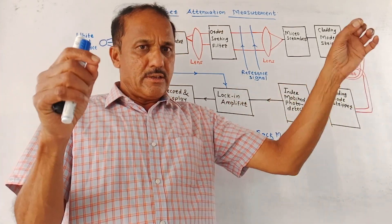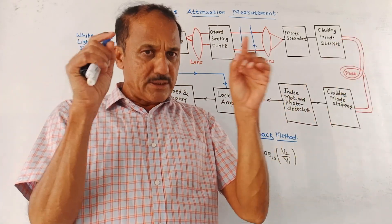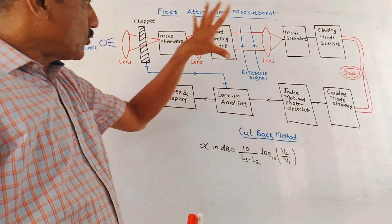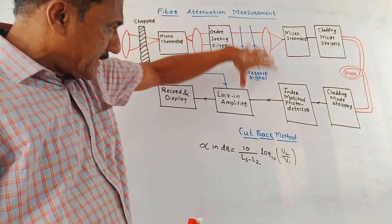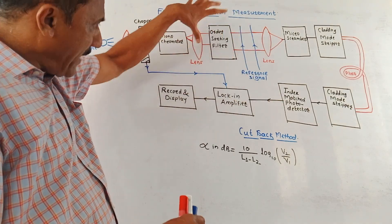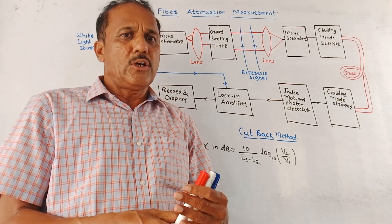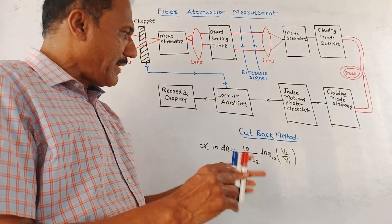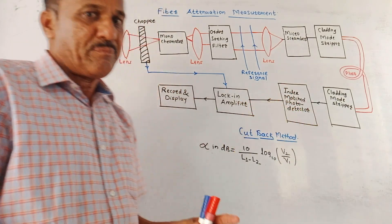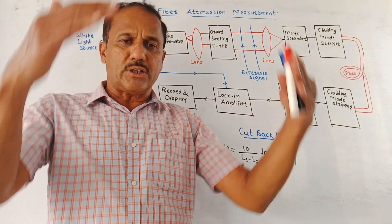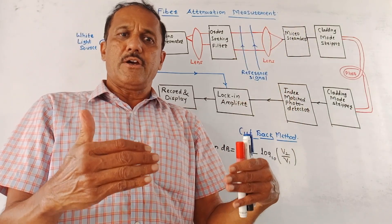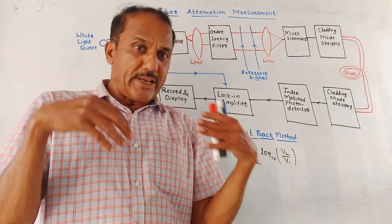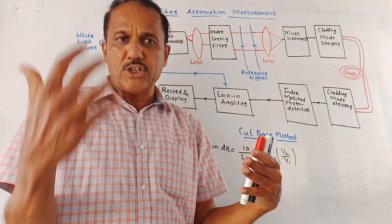Now to measure the attenuation, different techniques are available. But the most important or most commonly used technique is the cutback method. So we'll discuss this cutback method in detail. From the exam point of view, you may expect a question like: 'Draw the diagram of fiber attenuation measurement by making use of the cutback technique and explain the same.' Or the question may be: 'What are the different techniques used to measure the fiber attenuation and elaborate on the accuracy of each method?'